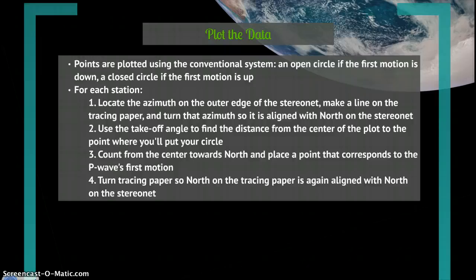For each seismic station, which is each line of data in your data set, locate the azimuth on the outer edge of the stereonet, make a line on the tracing paper, and turn that azimuth so it is aligned with north on the stereonet.